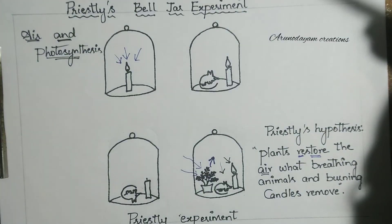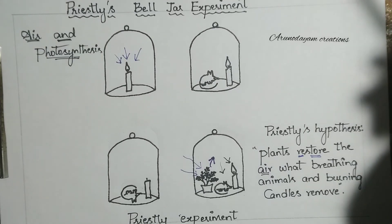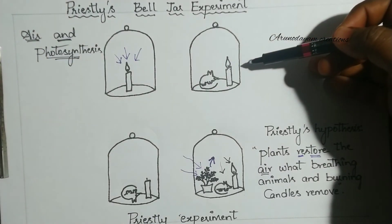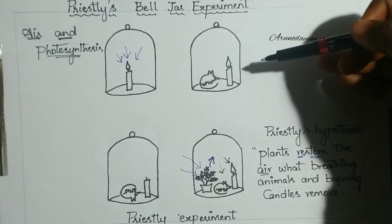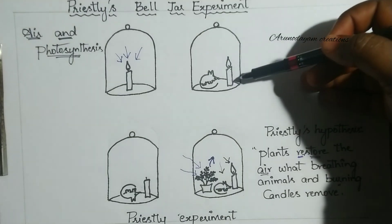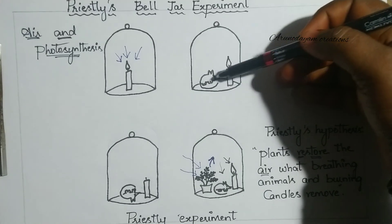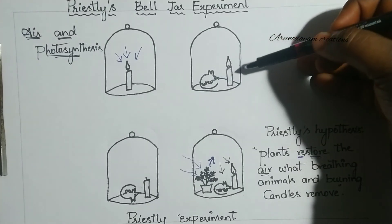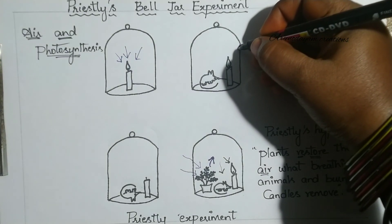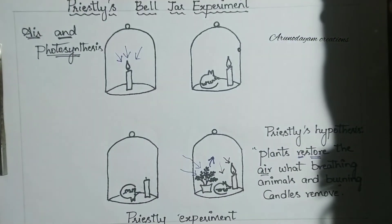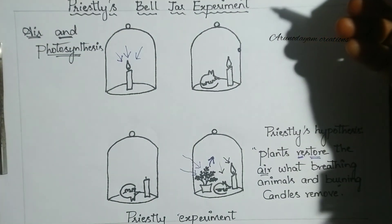A third logical question: in the second series of the experiment, Priestley introduced a burning candle and a mouse. What would happen if he made a tiny hole in the wall of the glass jar? Please tell your answer in the comments section.